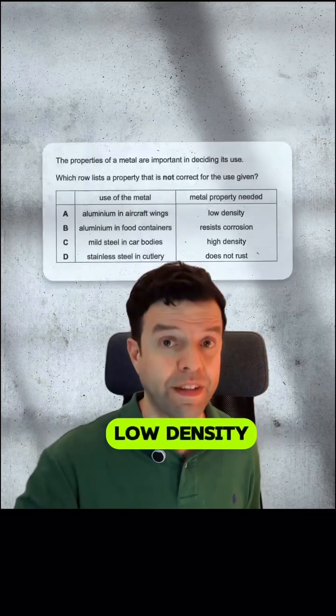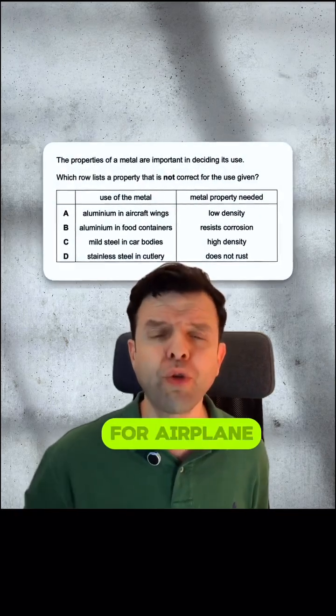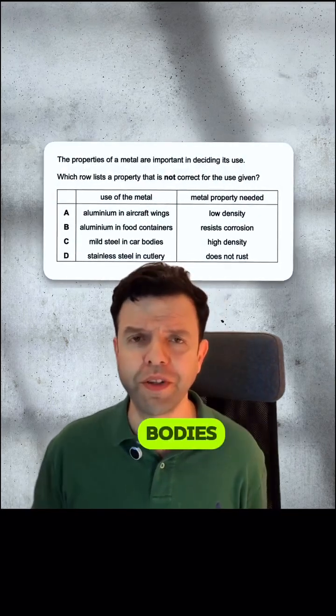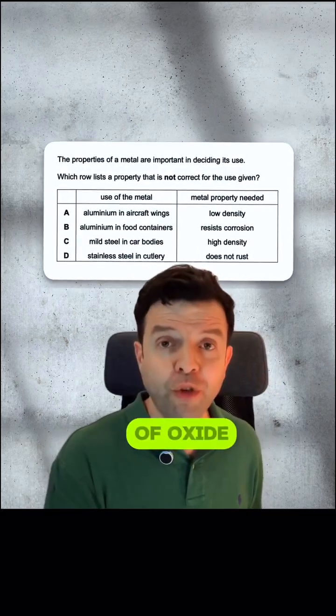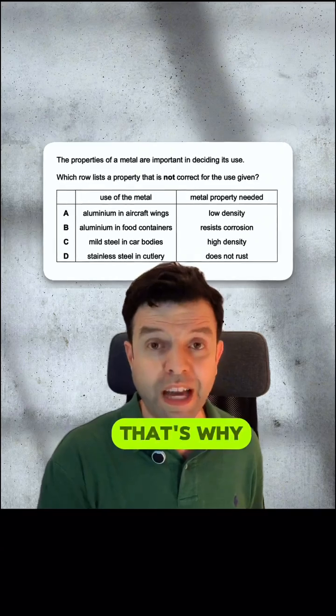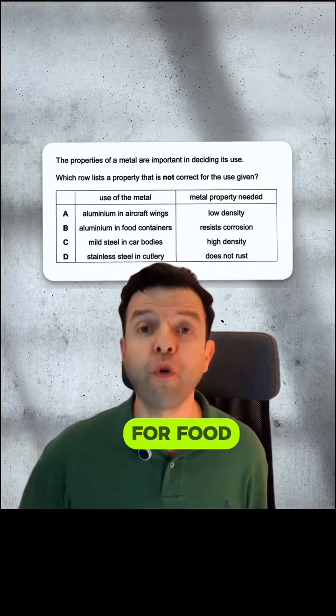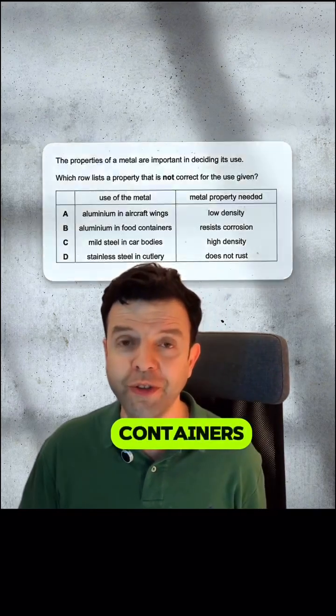Aluminium has low density, that's why it's used for airplane bodies. It's also covered with a layer of oxide, that's why it's used for food containers.